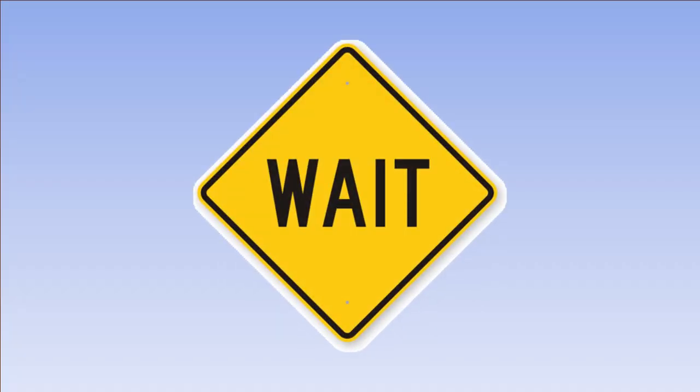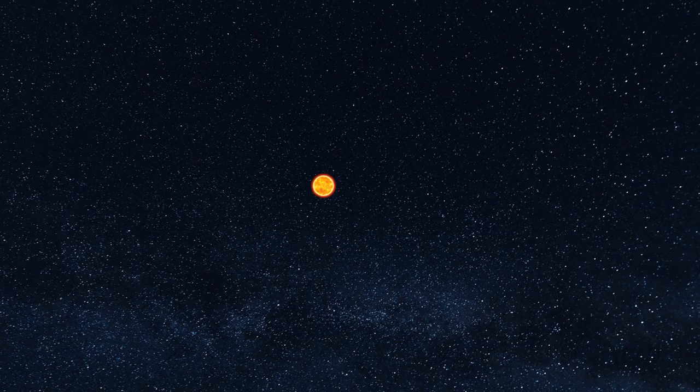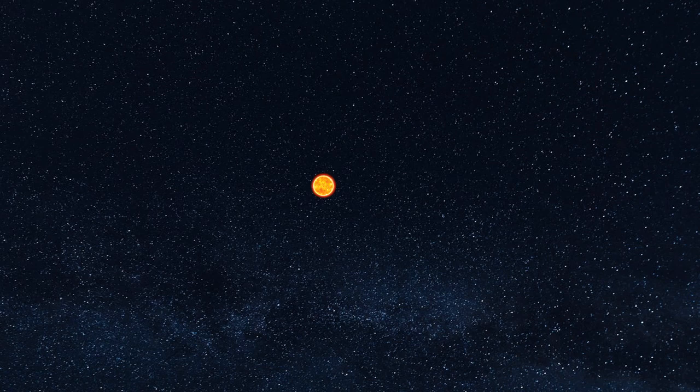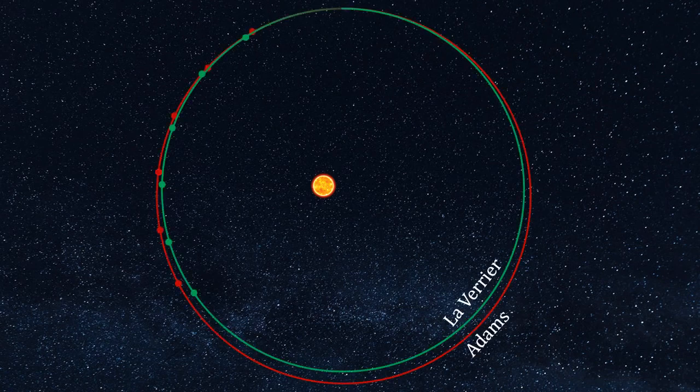But wait! This story of triumph and discovery comes with a huge caveat. The discovery of Neptune also depended greatly on serendipity and sheer luck. The orbits predicted by Le Verrier and Adams looked something like this.